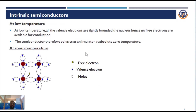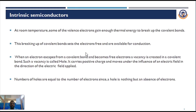At low temperatures, all the valence electrons are tightly bound within covalent bonds, so there are no free electrons available for conduction. Therefore, at absolute zero temperature, a semiconductor behaves as an insulator. At room temperature, some valence electrons gain thermal energy sufficient to break the covalent bonds, freeing those electrons for conduction. When an electron escapes from a covalent bond, a vacancy — called a hole — is created. The hole carries a positive charge and moves in the direction of an applied electric field. The number of holes equals the number of free electrons, since a hole is simply the absence of an electron.